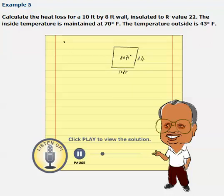We're also given that inside temperature is 70 degrees Fahrenheit and outside temperature, average outside temperature, is 43 degrees Fahrenheit. Therefore, the difference, or delta T, is equal to 27 degrees Fahrenheit.